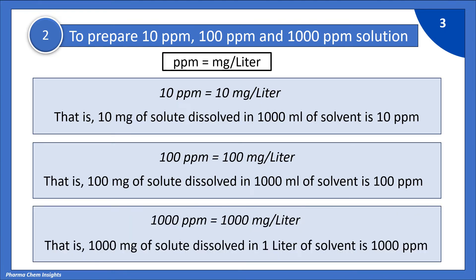And 1000 ppm is equal to 1000 mg per litre — that is, 1000 mg of solute dissolved in 1 litre of solvent such as water will give you 1000 ppm.